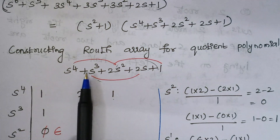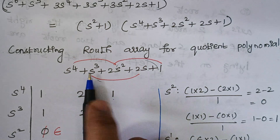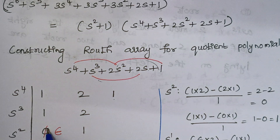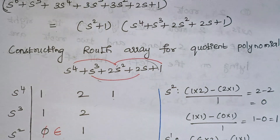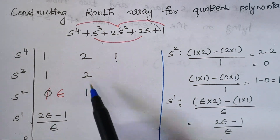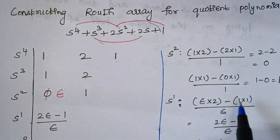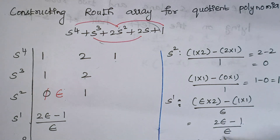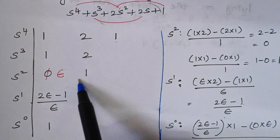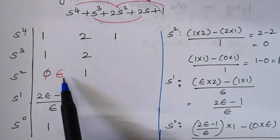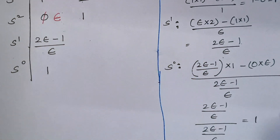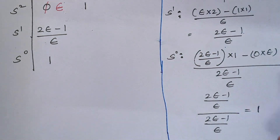Whenever the first term is 0, you replace it with epsilon and proceed. So here I replaced with epsilon. Then: epsilon × 2 minus 1 × 1 divided by epsilon gives 2ε minus 1 over ε. For S⁰: that term multiplied by 1 minus 0 × epsilon divided by that term — when computed, numerator and denominator are the same, so the answer is 1. This is the Routh array for the quotient polynomial.